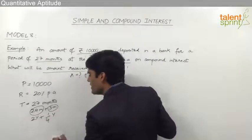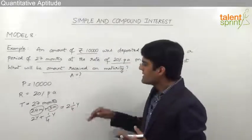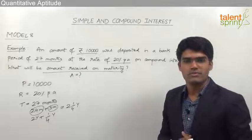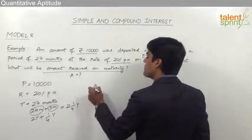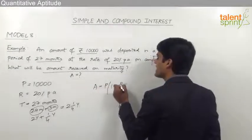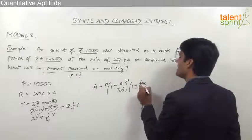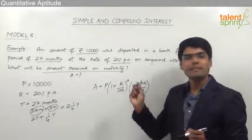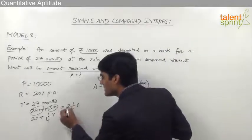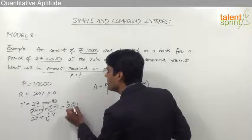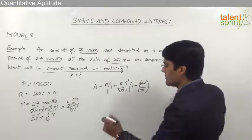The time period 2¼ years is in fractional form, so we use the formula: Amount = P × (1 + r/100)^a × (1 + (b/c) × r/100), where a is the integer part and b/c is the fractional part. Here, a = 2 and b/c = 1/4. Now we substitute these values to get the required answer.